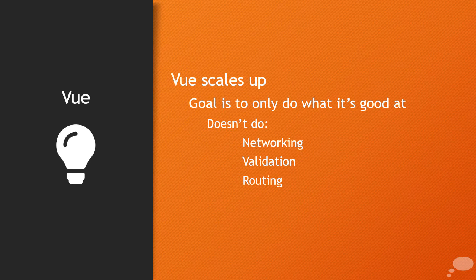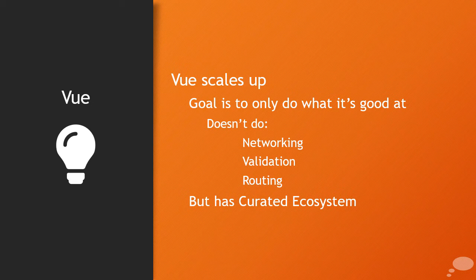When we talk about 'scales up,' the idea is that Vue itself wants to do as little as possible — its core competency is handling data binding and event handling in the browser. It doesn't do networking, validation, or routing out of the box. Vue has a curated ecosystem: when you need networking, instead of Vue rebuilding a whole networking ecosystem, they just say use whichever one you're most comfortable with. If you want validation, there are a few different styles that may appeal to you. They also have a routing component that can bolt on top of Vue to allow full SPA routing.